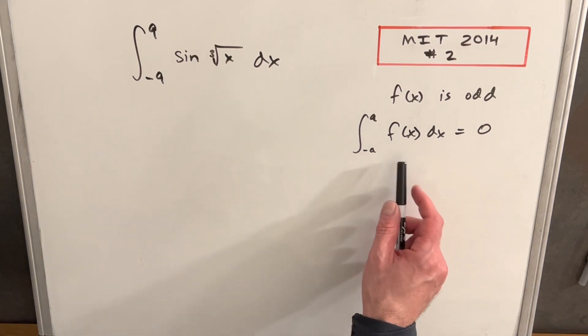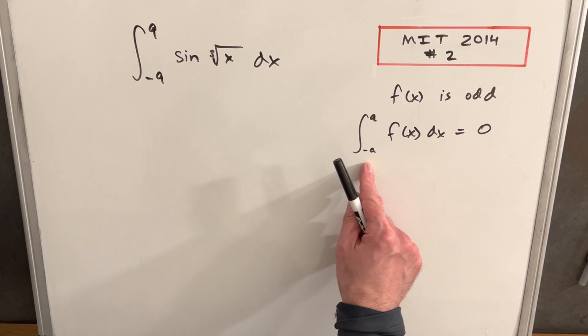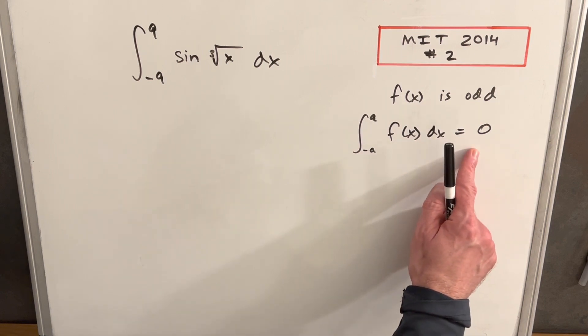We have this property here to the left that tells us if f of x is an odd function and our bounds are a to negative a, so we have the same bound but just a negative of it, then this whole integral is just going to be zero.